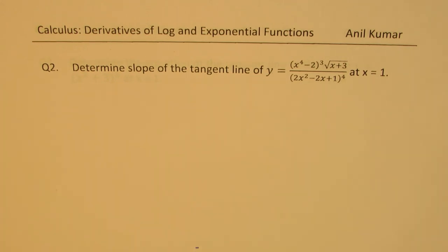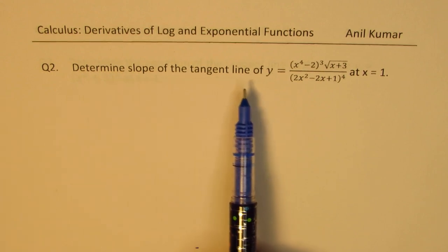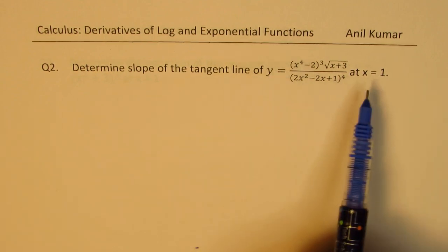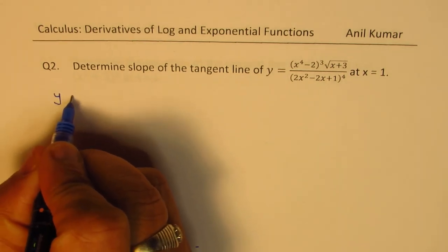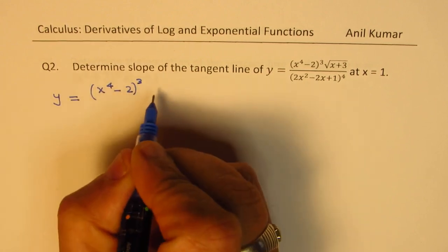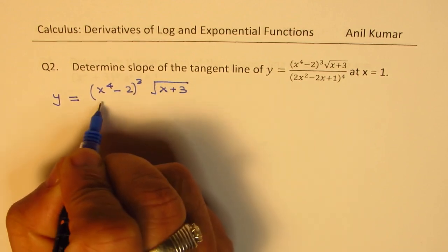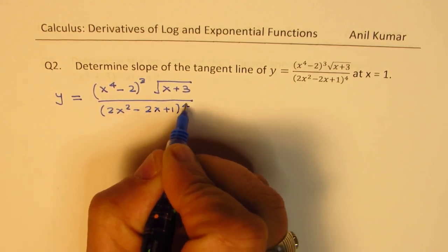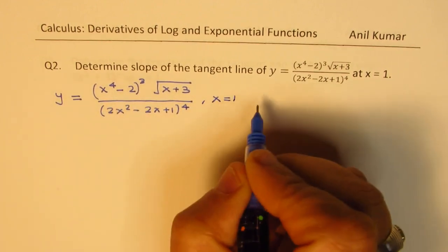Most IB test papers have two papers: one with calculator and one without calculator, so this is part 1 without calculator. The question is determine the slope of the tangent line of y equals (x to the power of 4 minus 2) cubed times square root of (x plus 3) over (2x squared minus 2x plus 1) to the power of 4, at x equals 1. First step: we should find the value of y at x equals 1.